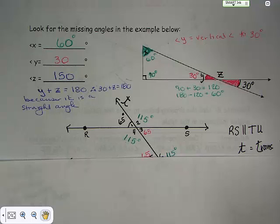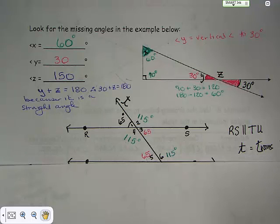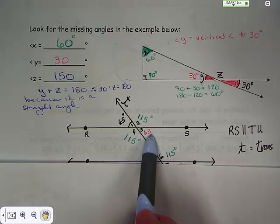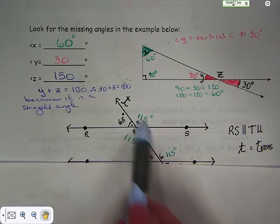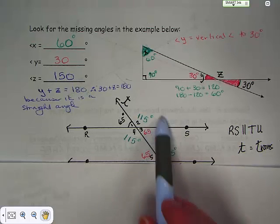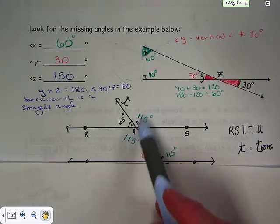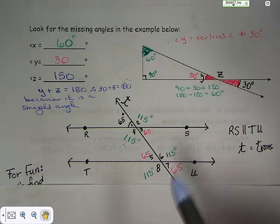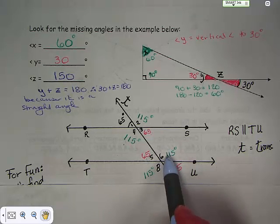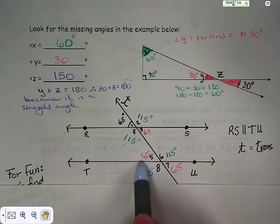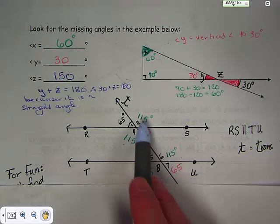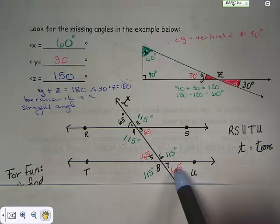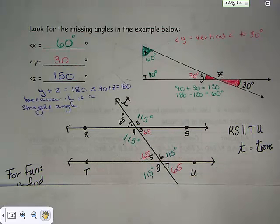This last part works with vertical angles and alternate interior angles. Starting with 65 degrees, its vertical angle is also 65. Since 65 and the adjacent angle must sum to 180, that adjacent angle is 115. Angles 2 and 4 are vertical, so angle 4 is also 115. Going down, the alternate interior angle is 65, its vertical is 65, and the supplementary angle is 115. So all angles in the figure are either 65° or 115°.